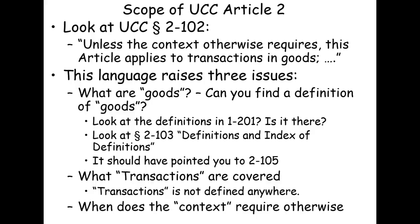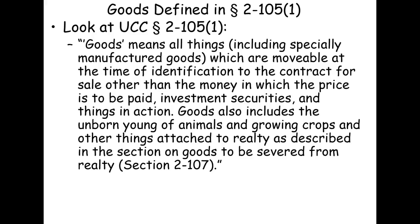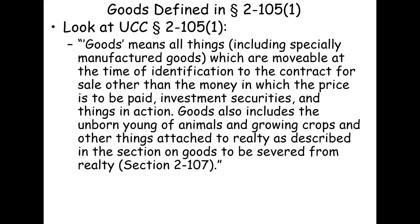Now let's turn to Section 2-105(1) and see how it defines goods. The language says: 'Goods means all things, including specially manufactured goods, which are movable at the time of identification to the contract for sale, other than money in which the price is to be paid, investment securities, and things in action.' Goods also includes the unborn young of animals, growing crops, and other things attached to realty as described in Section 2-107.